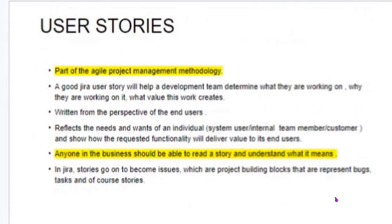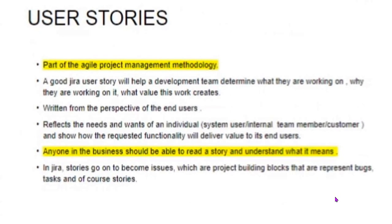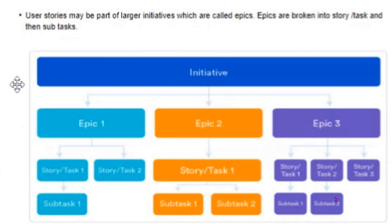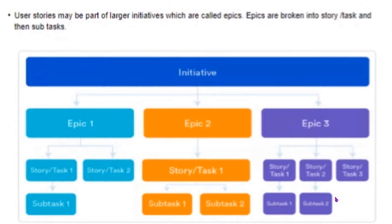In Jira, stories go on to become issues, which are project building blocks representing bugs, tags, and user stories. User stories are developed using a hierarchy: there is an initiative, and from the initiative you create Epic 1, Epic 2, Epic 3 — it can go on to several epics depending on how big the initiative is. Epics are a big chunk of work, further broken down into user stories, which are further broken down into tasks and sub-tasks.